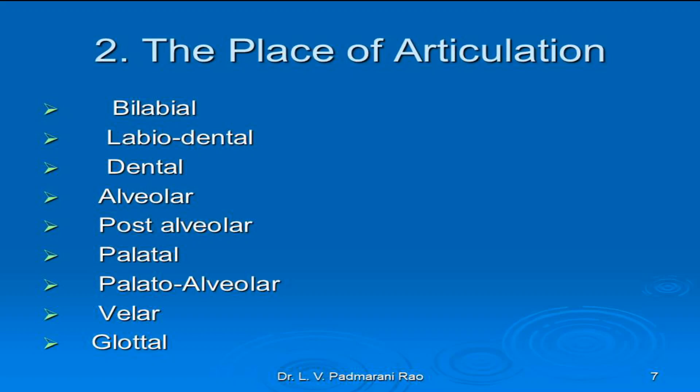The next is the velar sounds. Sounds that are articulated by the back of the tongue against the soft palate are called velar sounds. The examples are K as in 'kite', G as in 'go', and NG as in the last sound of 'sing'. These sounds are articulated with the back of the tongue and the soft palate. Hence they are called velar sounds.